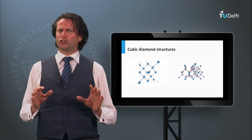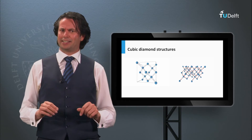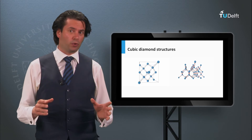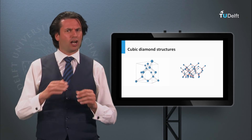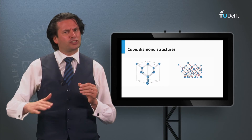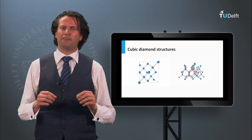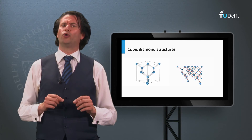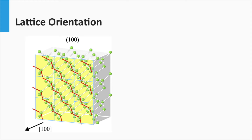However, it does not mean that this pattern is the same in every direction. In other words, if we make a large cut through the lattice, the various planes you can make do not look the same. Here we see two planes of two different cuts in a crystalline silicon lattice, which originally consisted of 3x3x3 unit cells.